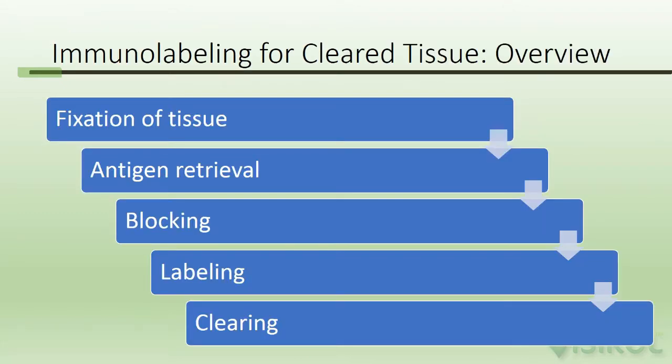Immunolabeling for clear tissue: an overview. Immunolabeling requires five steps: fixation of tissue, antigen retrieval, blocking, labeling, and clearing.